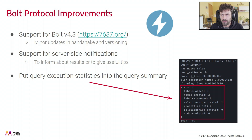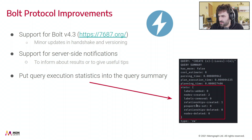On the protocol improvement side, there is now support for Bolt 4.3, which has some minor updates in handshake and versioning. More importantly, there is now support for server-side notifications, which can inform you about results or give you some useful tips. Maybe the most interesting thing is execution statistics as part of the query summary — if you execute a query, the stats will contain how many labels were added or how many relationships were created.